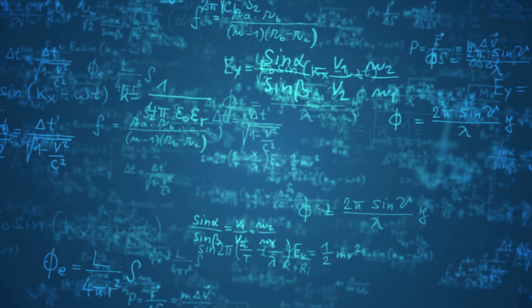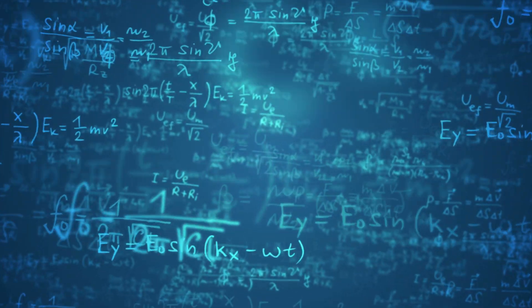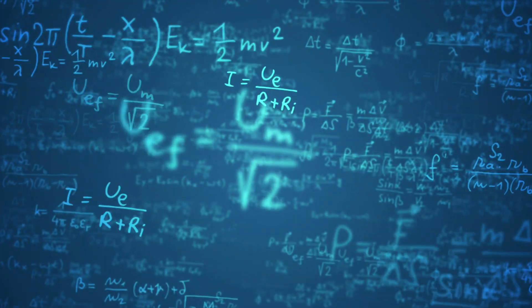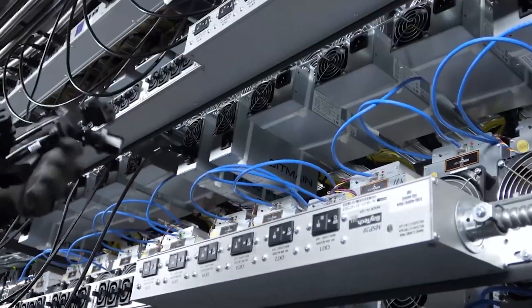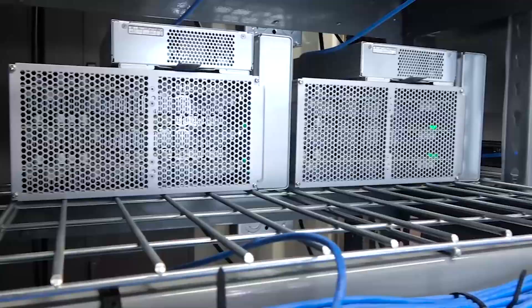Bitcoin miners use these machines to solve a complex computational math problem, also called proof of work or mining. To simplify: the concept is similar to traditional mining except you're not digging in the ground — you're providing computing power to the Bitcoin network. Bitcoin mining is an integral part of Bitcoin that ensures fairness while keeping the network secure.